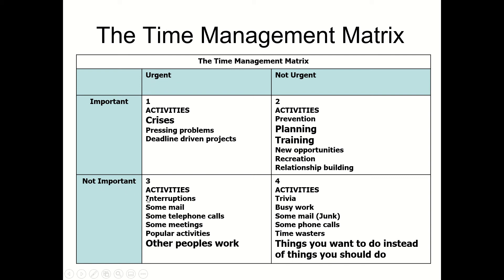Quadrant three is still urgent but not important. These are interruptions, emails, telephone calls — things that distract you from what you should be doing. Usually it's somebody else's work. Sometimes people ask you to do something as a favour, so you stop doing your own planning and training and start doing their work. It's important and urgent for them, not for you — so you shouldn't really be doing it, but a lot of people get sucked into that.